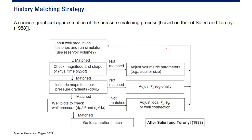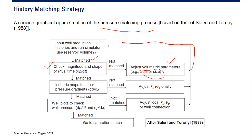This is the strategy to obtain good pressure matching. First we input well production history and run the simulator using reservoir volume. If it matches, we check the magnitude and shape of pressure versus time. If it doesn't match, we need to adjust volumetric parameters — for example, aquifer size. Then as a cycle, if the magnitude and shape match, we create isobaric maps to check the pressure gradient.